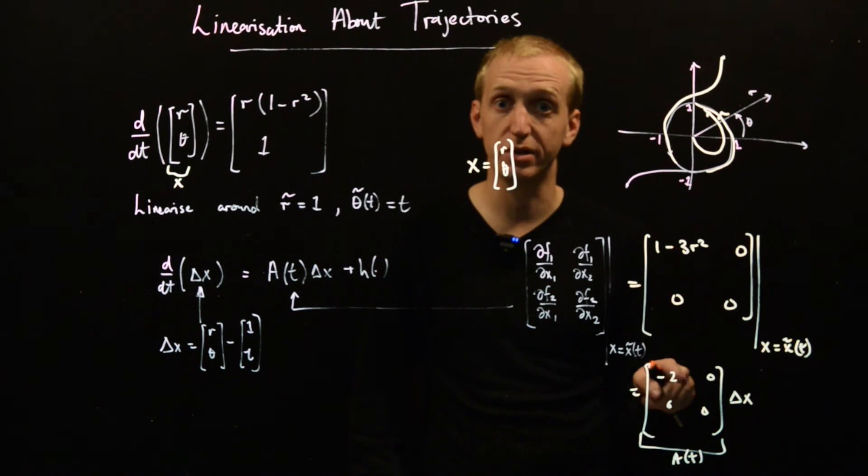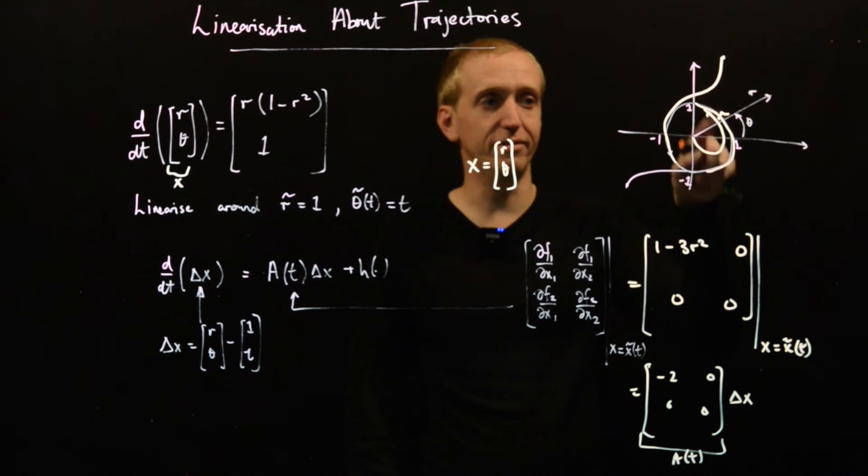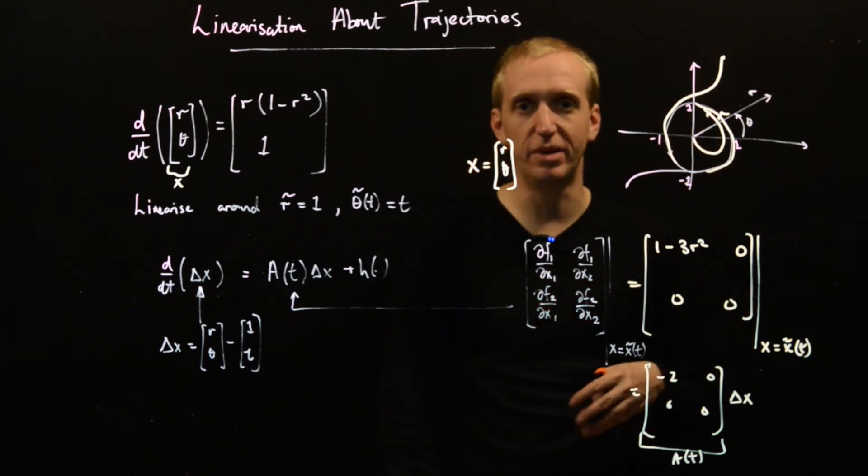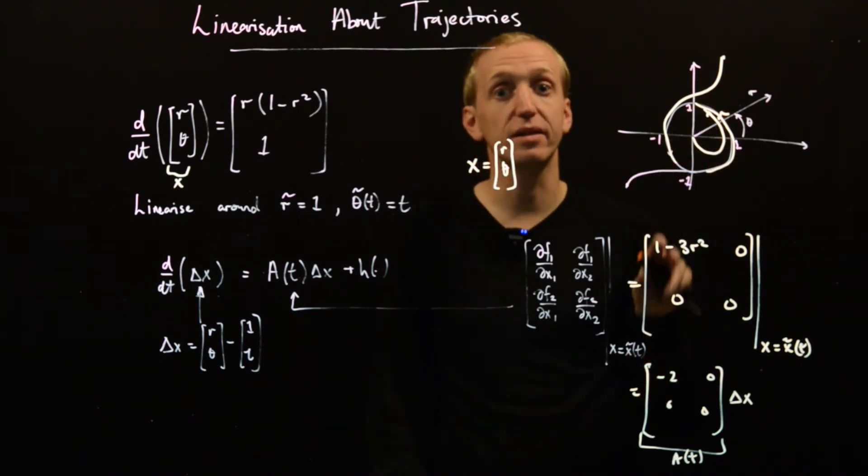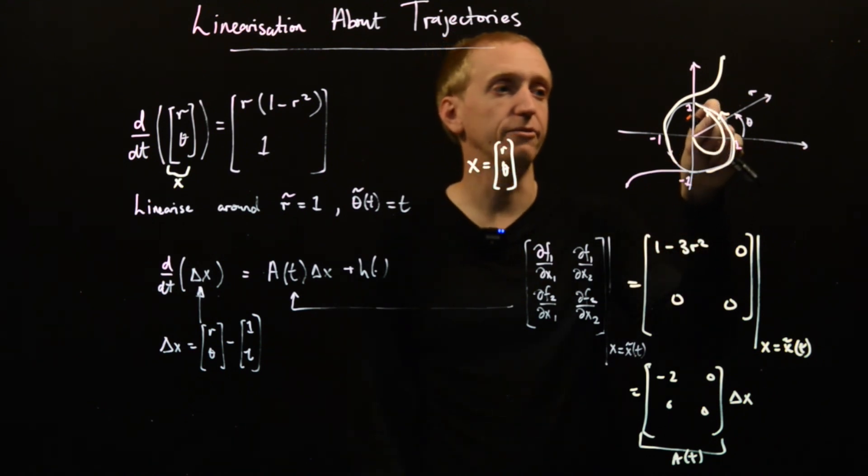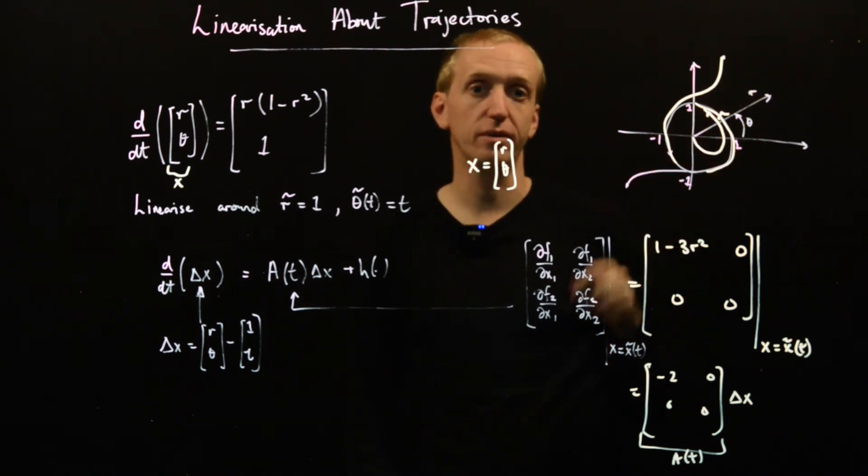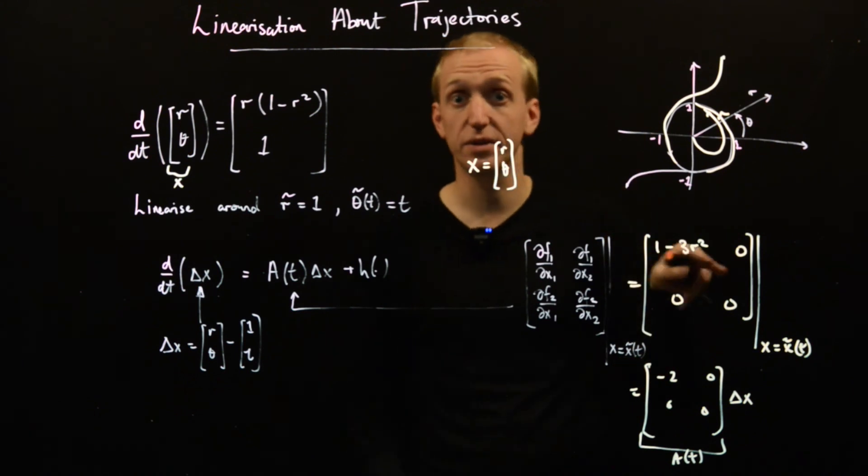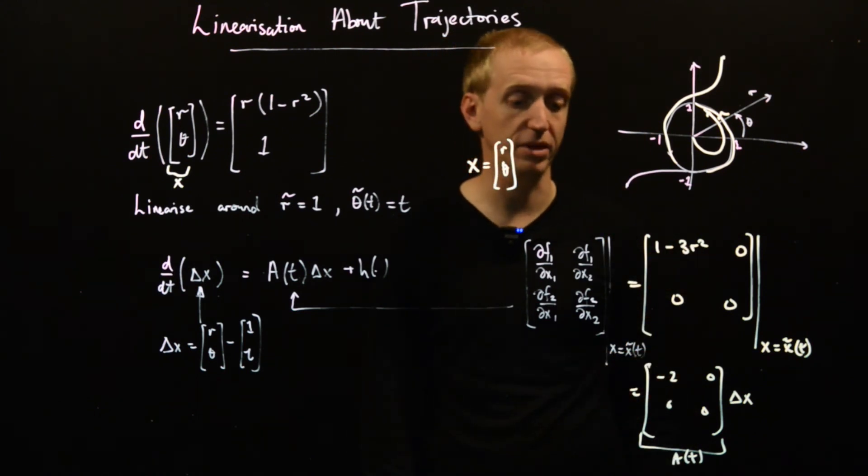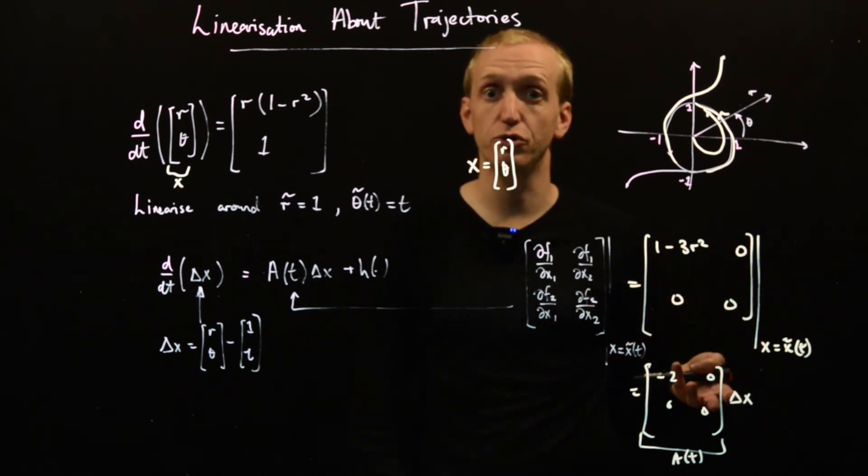We're actually locally asymptotically stable with respect to deviations in r. If you mess around with this argument a bit and try to make things more rigorous, this is actually a way to prove that this is a limit cycle, because you're able to show that for deviations in the radial direction, we'll always come back and we're marginally stable in the theta direction. This just means if we give a little nudge, we just advance our limit cycle a little bit, but we stay on the same limit cycle and have the same periodic behavior. But that's not the point here. The point is just to illustrate linearization around trajectories one more time.